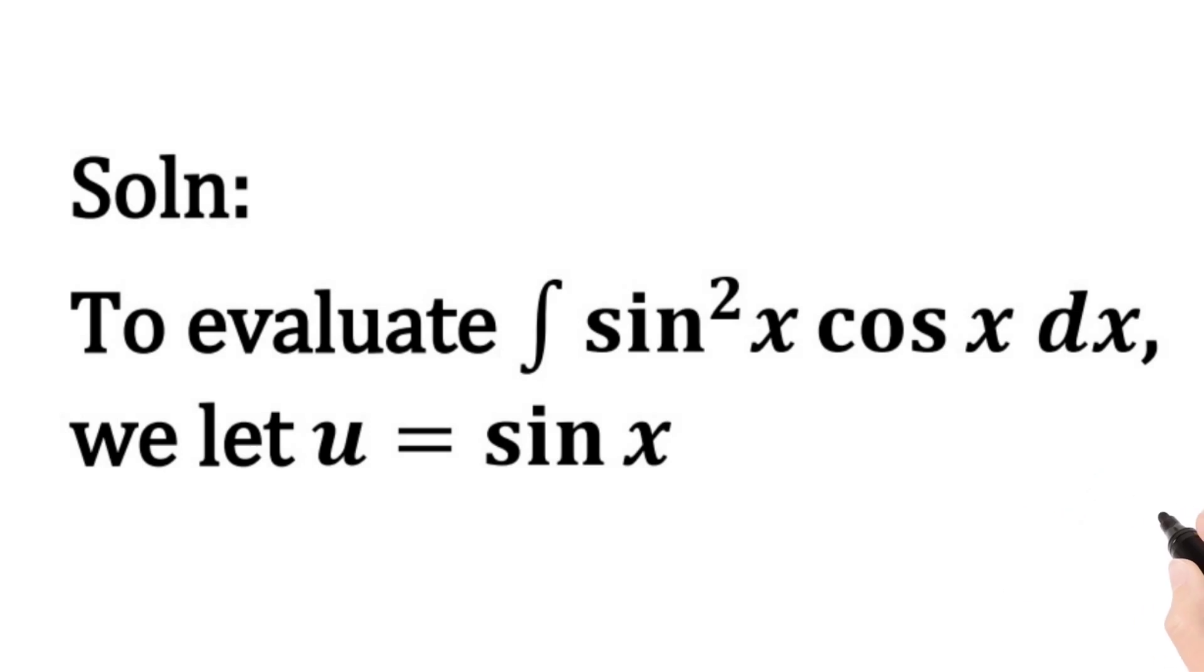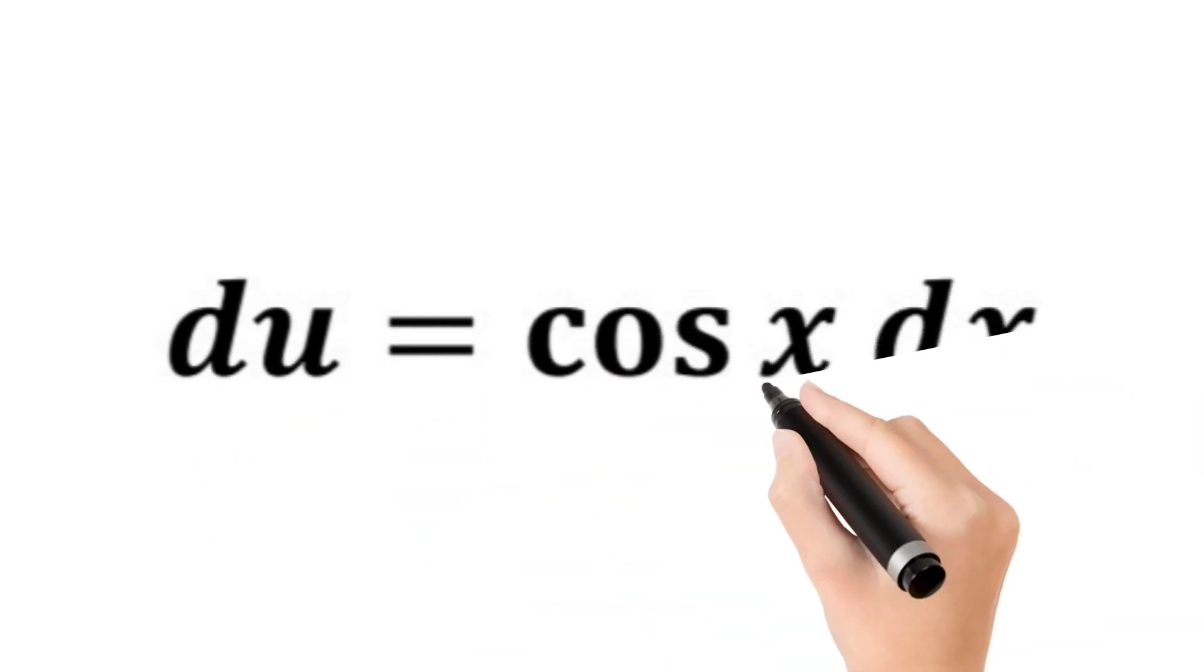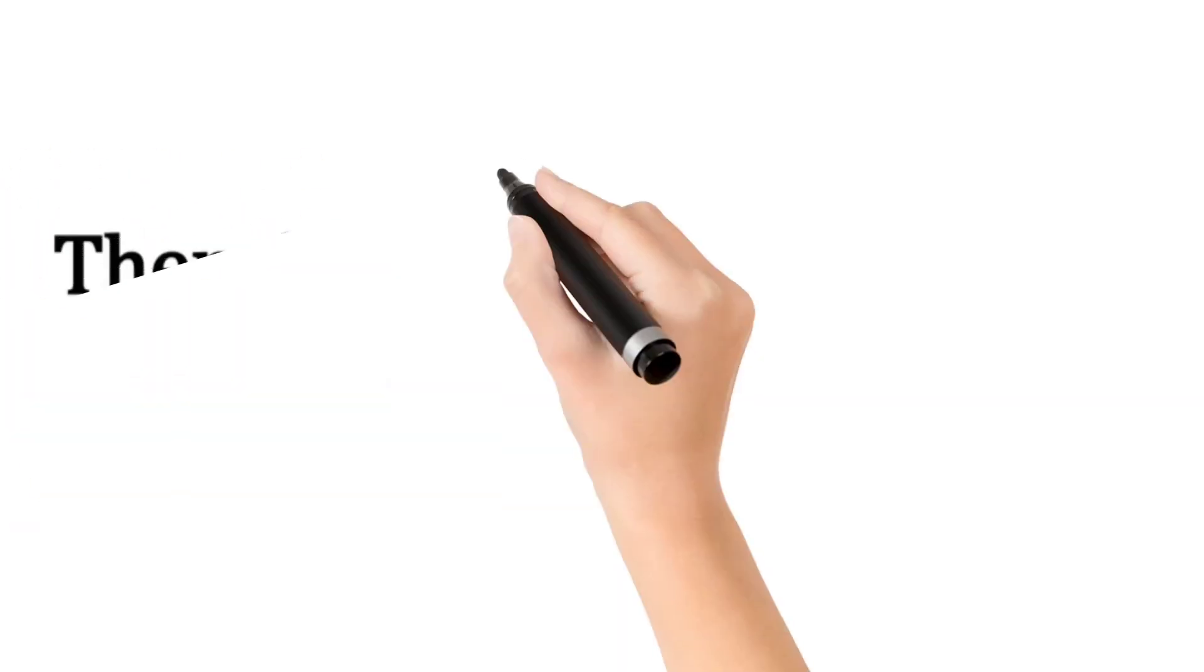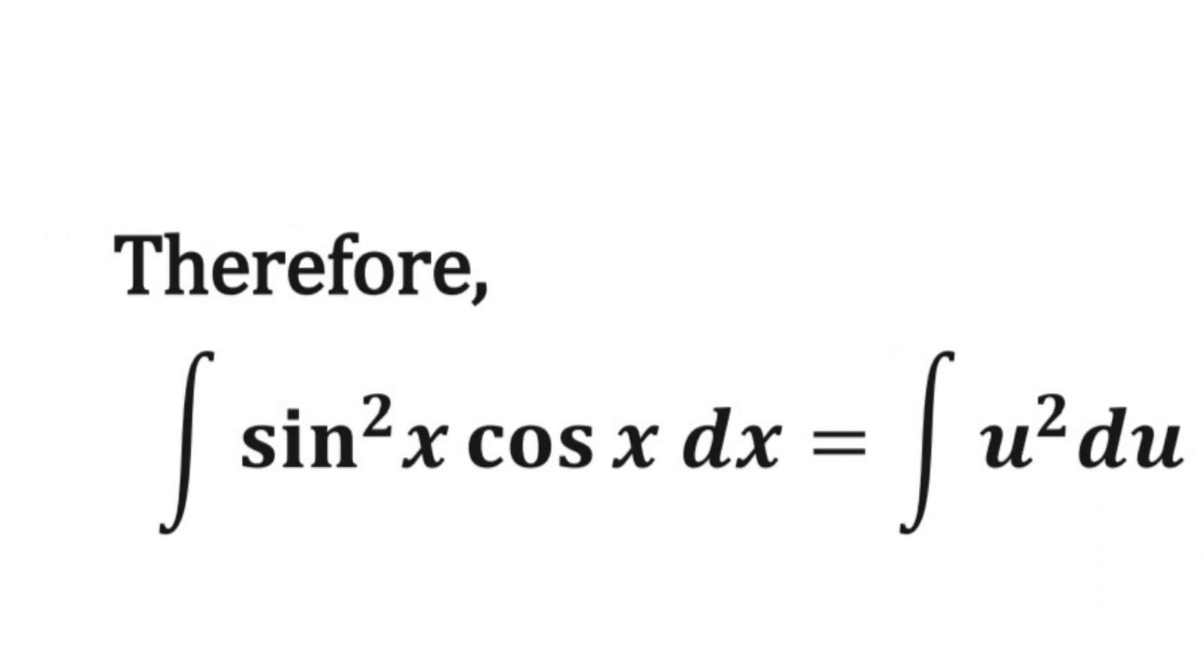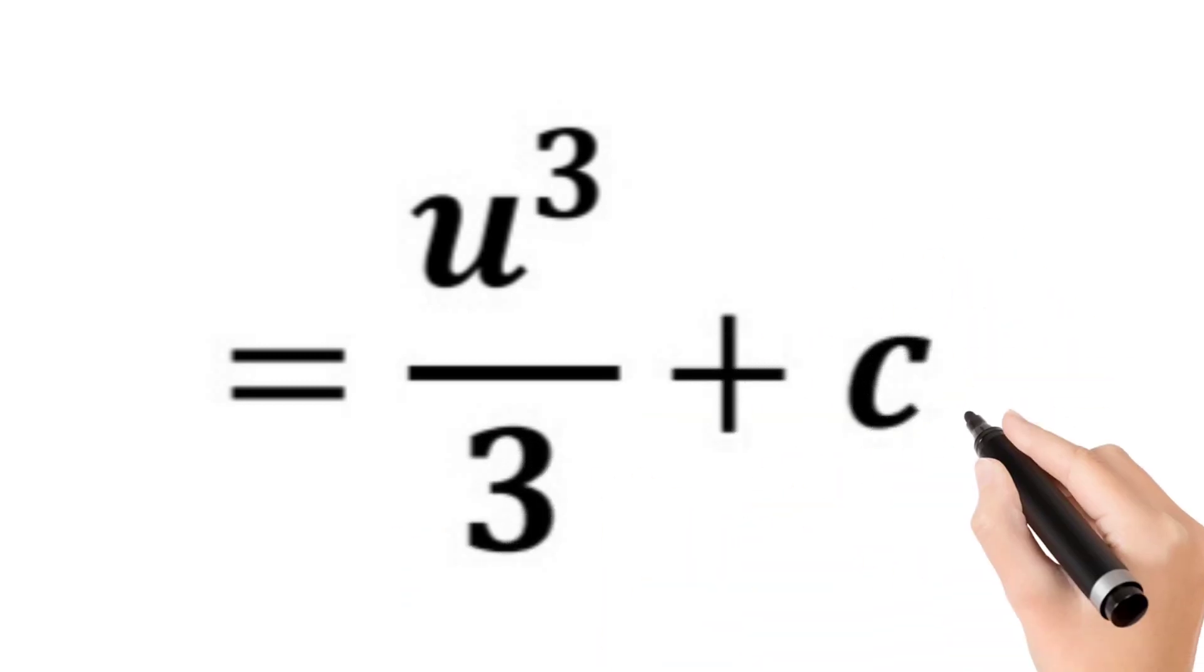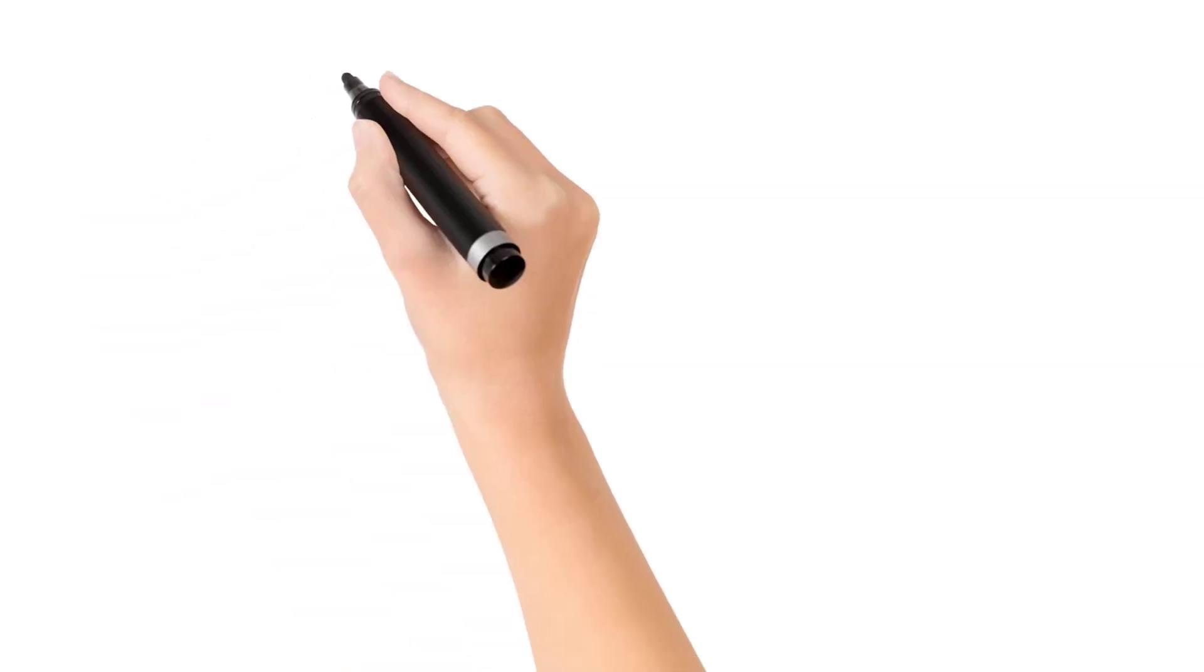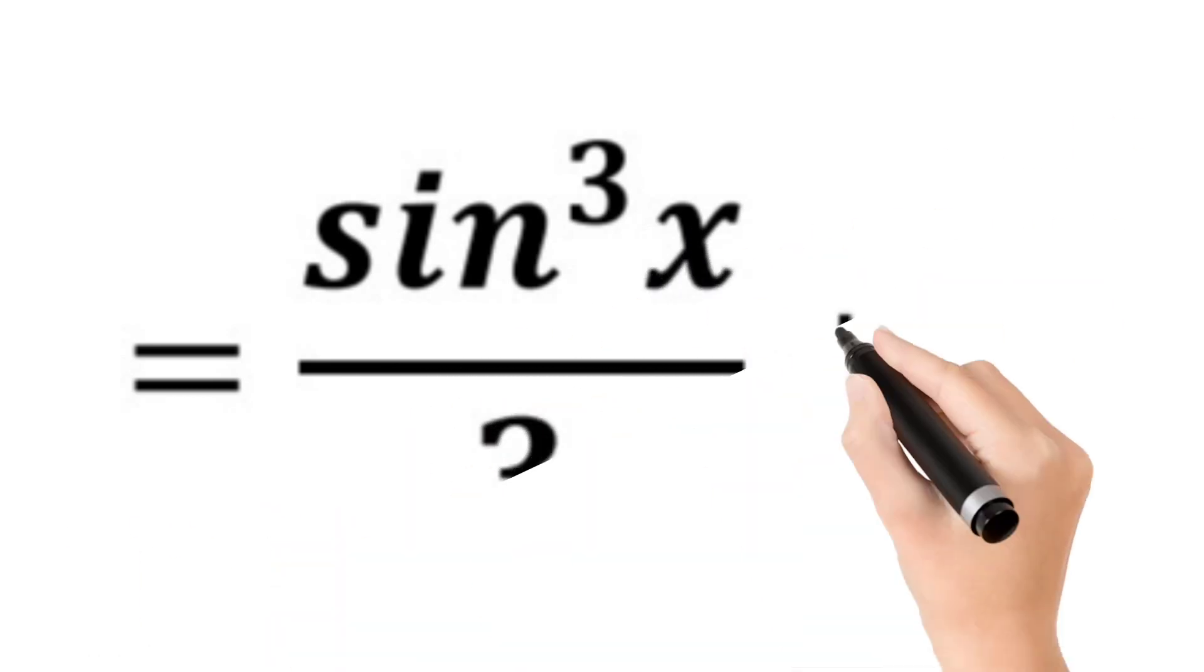we let u be equal to sin x, and du is equal to cos x dx. Therefore, integral of sin²(x) cos(x) dx is equal to integral of u² du. If we integrate that, we will have u³ all divided by 3 plus c. Since u is equal to sin x, we will now have sin³(x) all divided by 3 plus c. So our result is sin³(x) over 3 plus c.